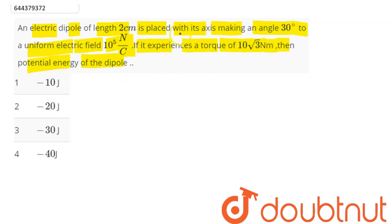We know here that the dipole is making an angle of 30 degree with uniform electric field. So we have here, this is our electric field, and the dipole here is making an angle of, let's say, 30 degree with the electric field.